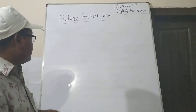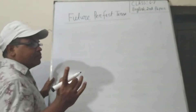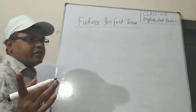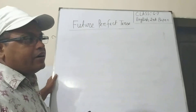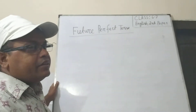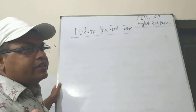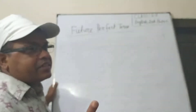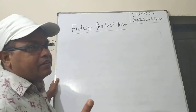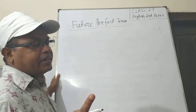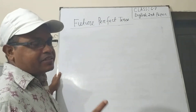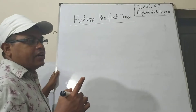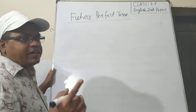Look at the example first. In the future continuous tense, the example is: I shall be writing a letter.